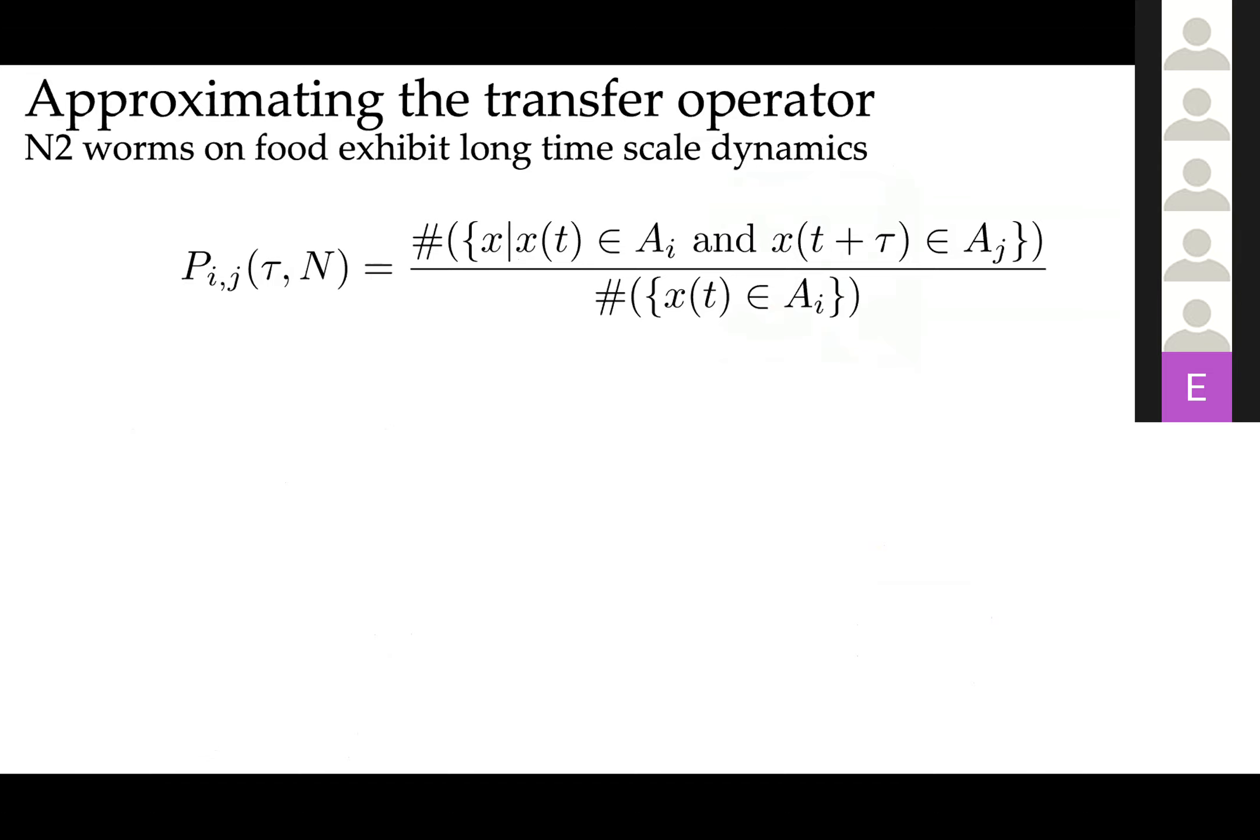Once you define the system state, then we can approximate the action of the operator by making small partitions in state space and basically computing the transition matrix within all of these microstates. Of course, this transition matrix will be dependent on the actual transition timescale, this parameter tau. Depending on your choice of tau, you essentially get different representations of the dynamics.